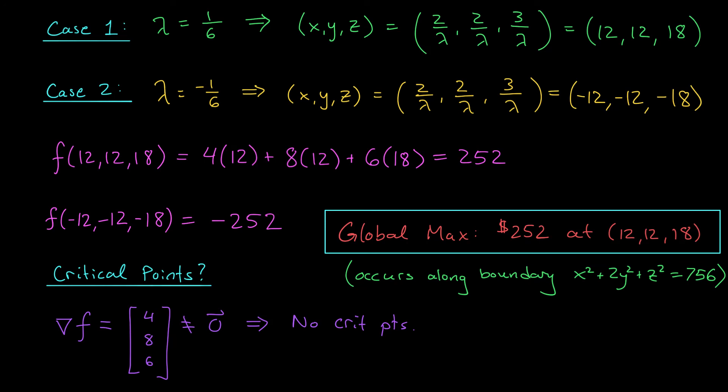I'd like to end this video by quickly discussing the meaning of this Lagrange multiplier, lambda equals 1 sixth. What is this telling us in the context of our problem? Well, in general, the Lagrange multiplier tells you how sensitive your maximum and minimum values are to tiny changes in your constraint curve. For instance, in this problem, we're constrained by this number, 756. This expression involving X, Y, and Z can't get bigger than 756. But what would happen to our maximum and minimum values if we increase that to 757? Well, this Lagrange multiplier is telling us we should expect our profits to increase by about one-sixth of a dollar.